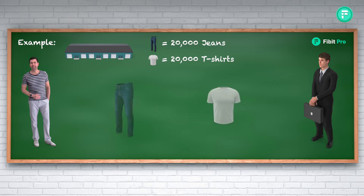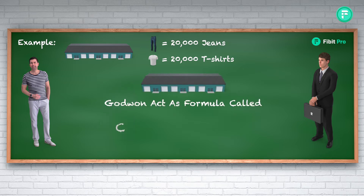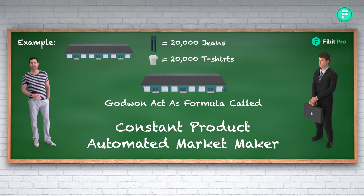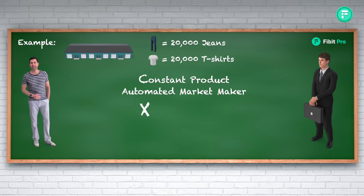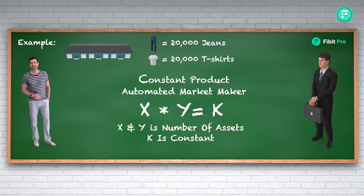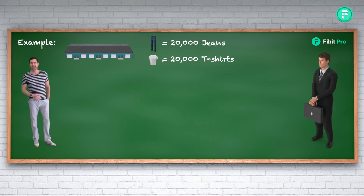This way, if one month there is less jeans production, the jeans will cost more to buy. The godown acts as the formula for an automated market maker, known as the constant product automated market maker. It utilizes the formula x times y equals k, where x and y represent the number of assets and k is a constant that never changes. In this case k is 400 million.